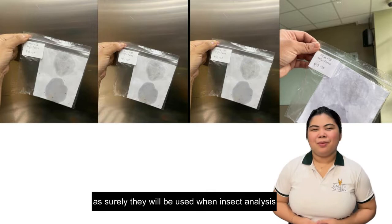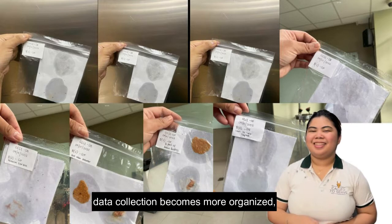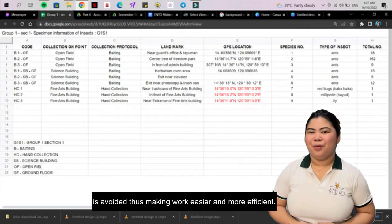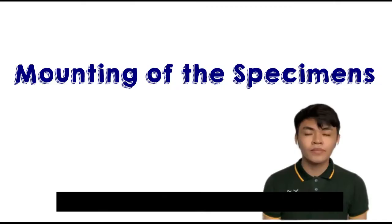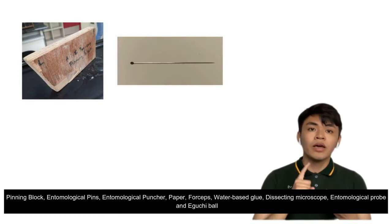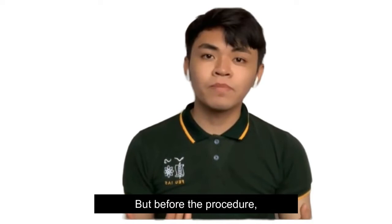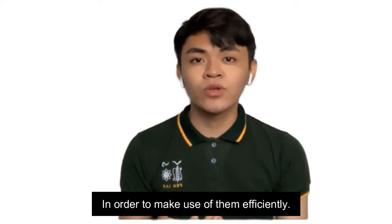By accounting and manually or digitally inputting such data, data collection becomes more organized and repeating of already accomplished work is avoided, thus making the work easier and more efficient. For the mounting of specimens, various materials were utilized: pinning block, entomological pins and puncture paper, forceps, water-based glue, dissecting microscope, entomological probe, and an eguchi ball. Sufficient knowledge in using these materials is needed in order to use them efficiently.